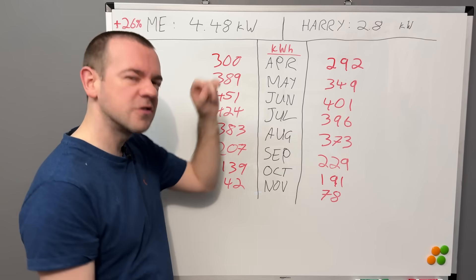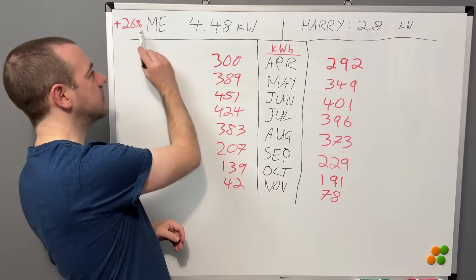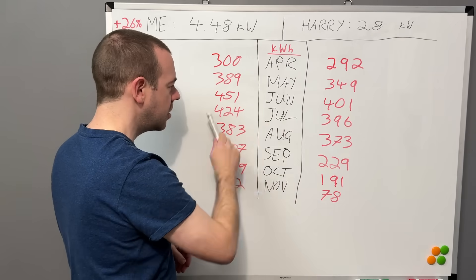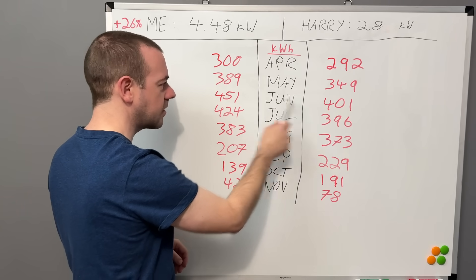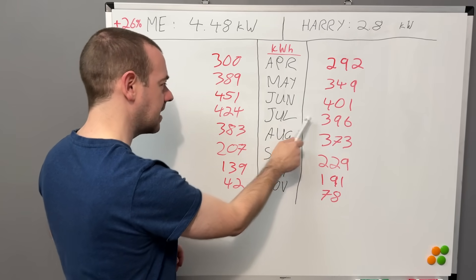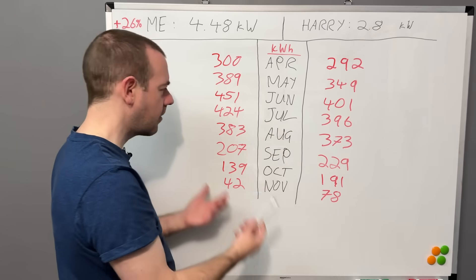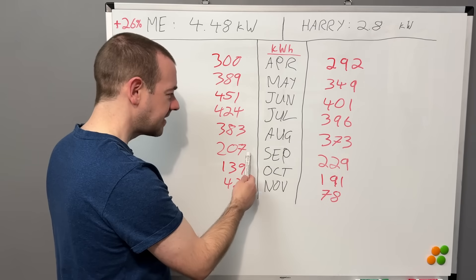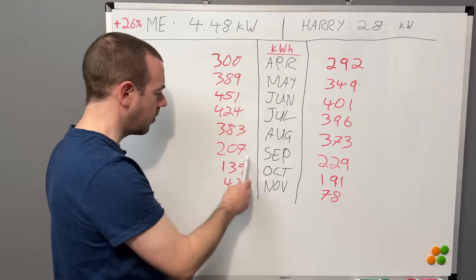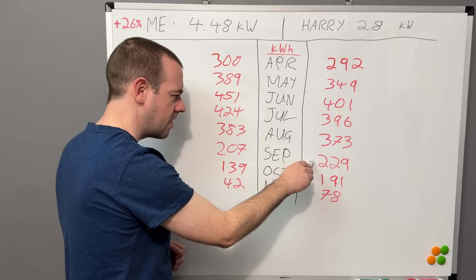May, you can see the sun's starting to come out a bit. I'm just creeping ahead a little bit, but nowhere near as much as I should be. June and July, again the sun's coming out, so I'm 50 kilowatt hours in that month ahead, 28 kilowatt hours in July. August, I'm only 10 kilowatt hours ahead. Again, I should be way ahead of this.